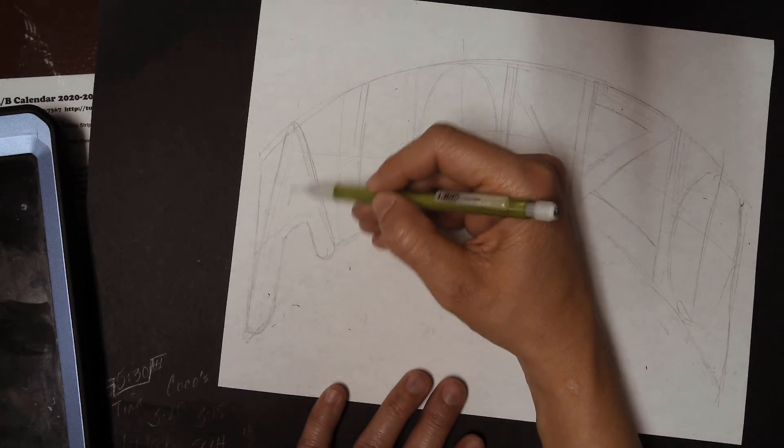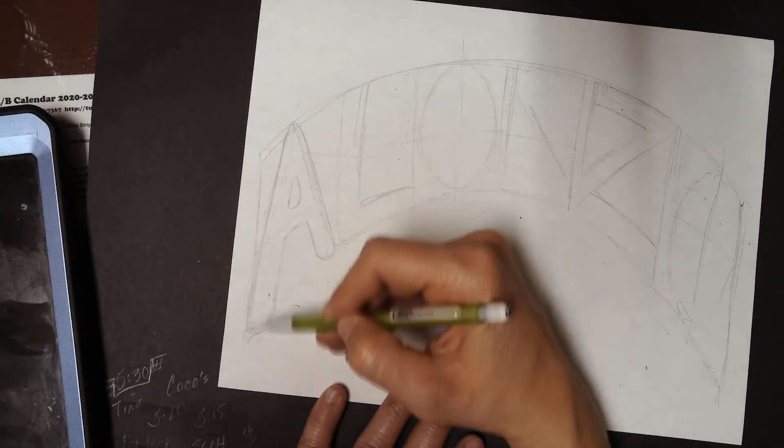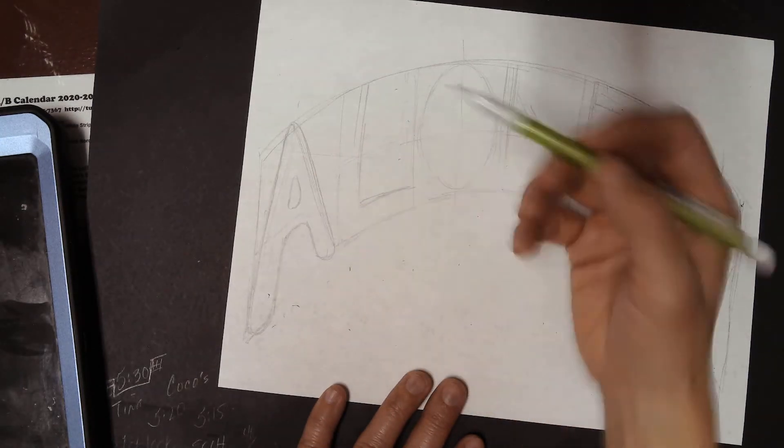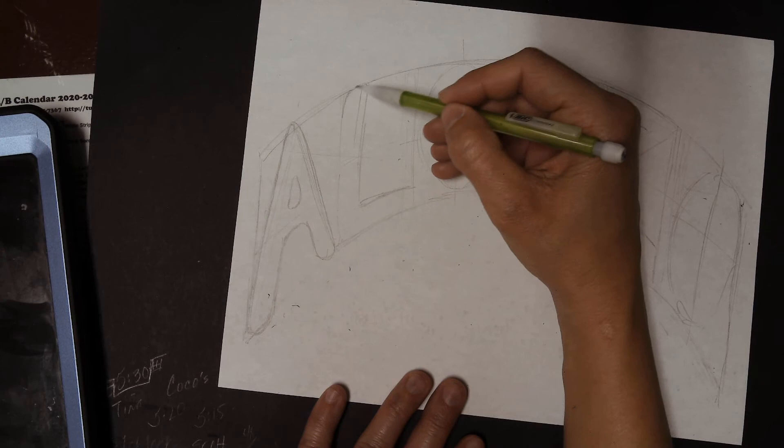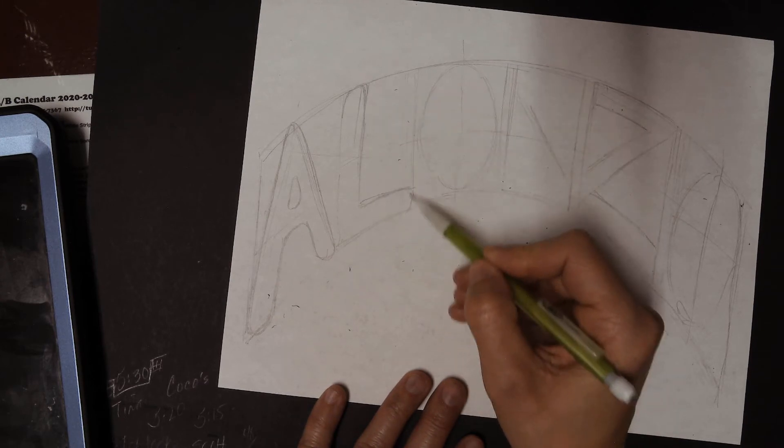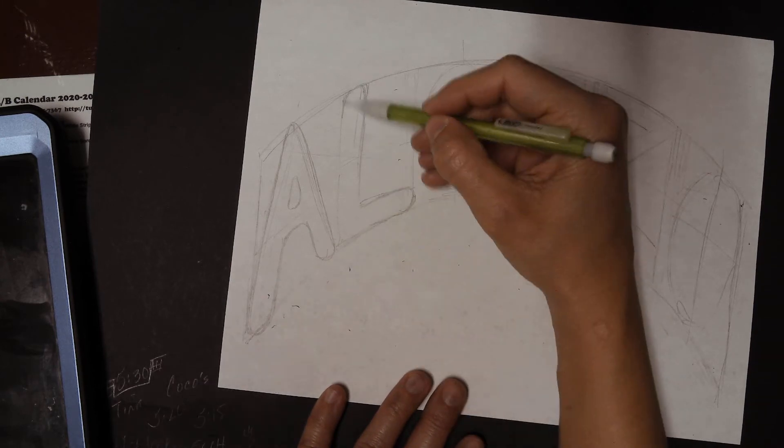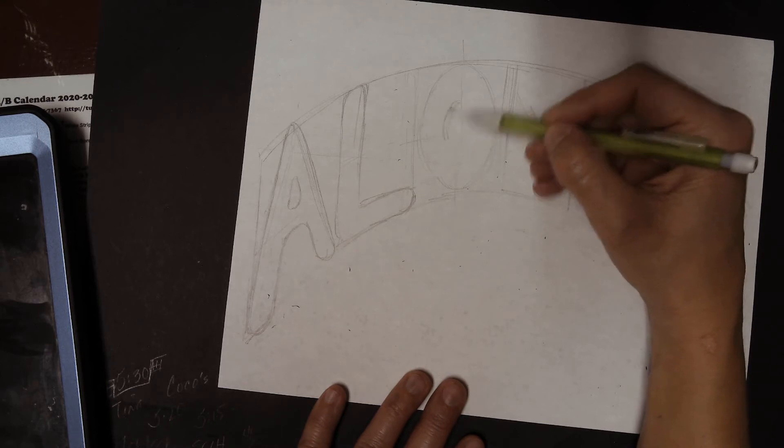So in the center right here, we'll just round it up a bit so it doesn't look like everybody else's, which is kind of the point. And then we'll make this round, and we'll round out the end here. And then we'll do the same thing on the inside of this O.